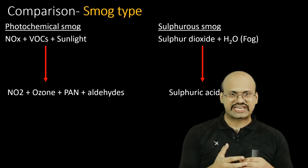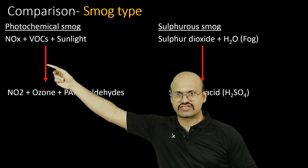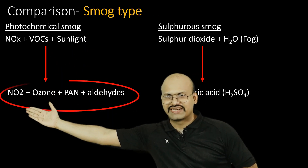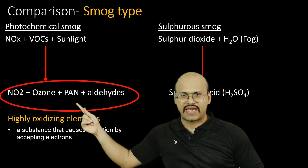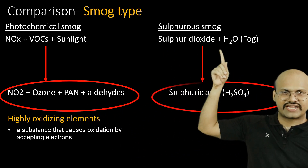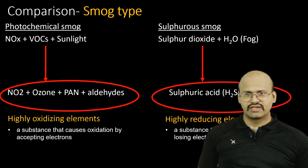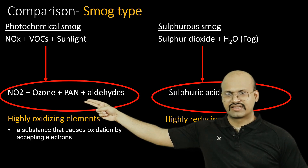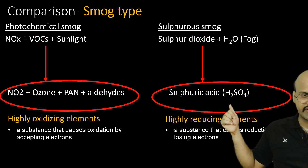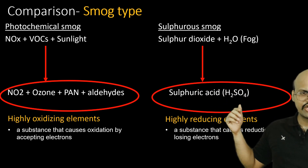The major chemicals involved in both smogs: in photochemical smog, nitrogen oxides and volatile organic compounds, along with sunlight, produce nitrogen dioxide, ozone, PAN, and aldehydes. In sulfurous smog, the mixture of sulfur dioxide and fog creates sulfuric acid. These gases in photochemical smog are mainly oxidizing agents, while sulfuric acid and the other gases in sulfurous smog are reducing agents.